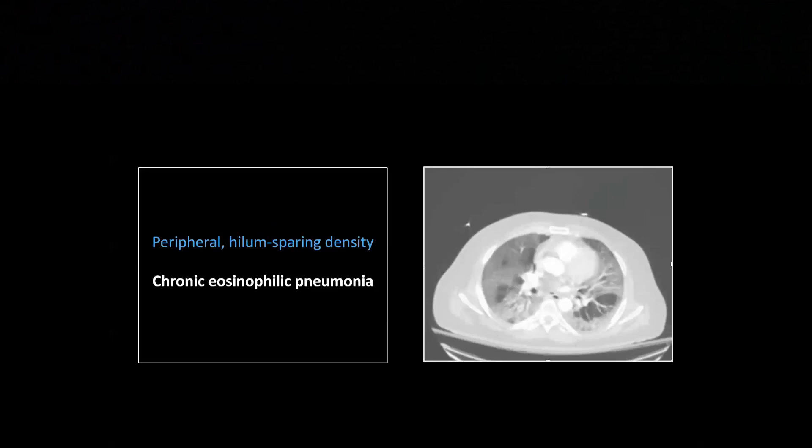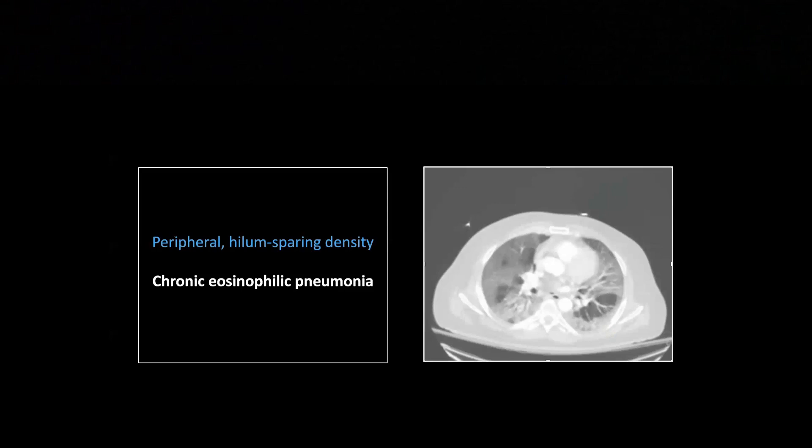A little less common. This one is what they call reverse pulmonary edema. It's the exact opposite of what we were just looking at. It's peripheral and it spares the central portions of the various lung lobes. This is unfortunately one that's also nonspecific. You look up reverse pulmonary edema and you'll get a whole big list. But the classic is eosinophilic pneumonia that causes this peripheral ground glass density or even consolidation.